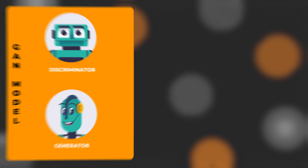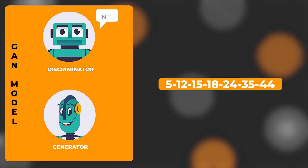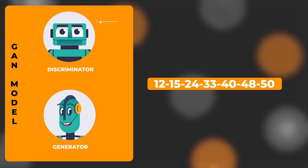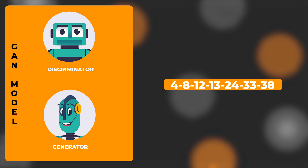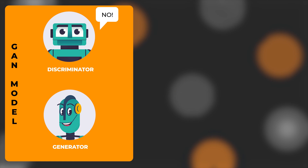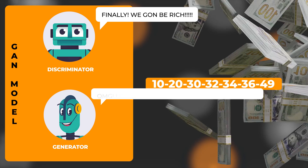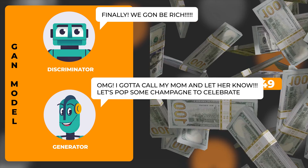Similarly, in my AI lottery model, the generator creates new sets of Lodomax numbers, while the discriminator checks if they are likely to be winning numbers. And just like with the dog picture, the generator uses the feedback to create better sets of numbers over time. It's like a game between the generator and the discriminator, with the goal of creating something close to perfect.